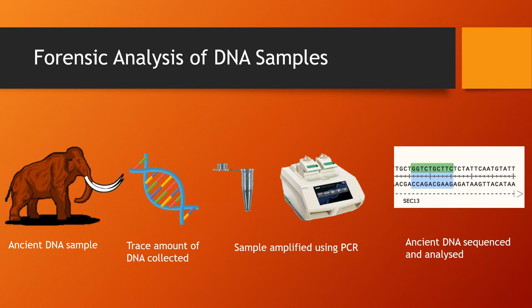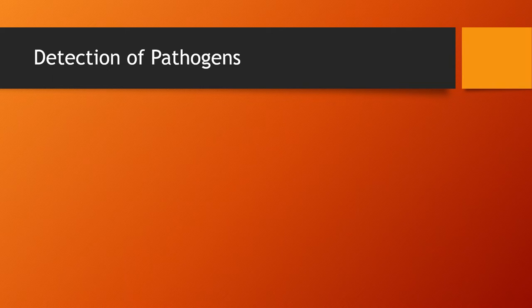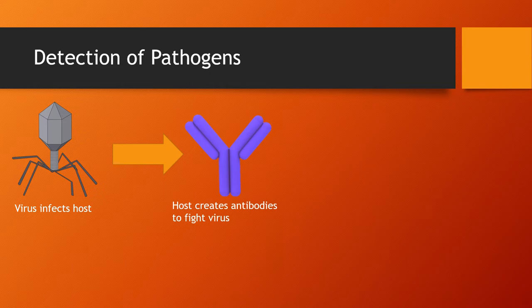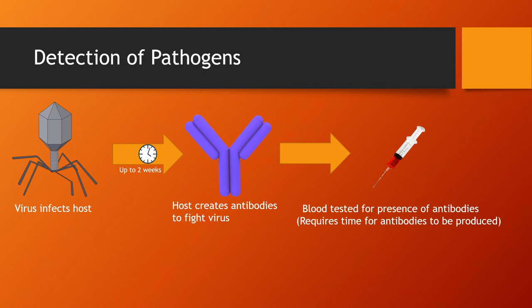Another application of PCR is in the detection of pathogens. I'll use a viral infection as an example. When the virus infects the host, the host will produce antibodies in response, but this can take up to two weeks. The traditional method for healthcare professionals to detect these viral infections is to screen the host's blood for the antibodies that they're producing.